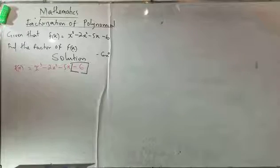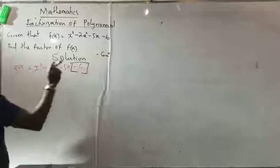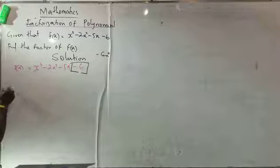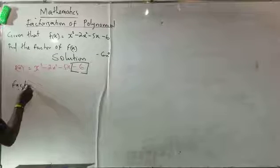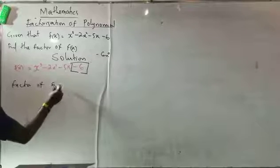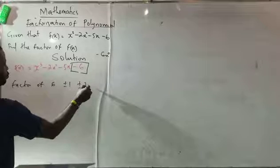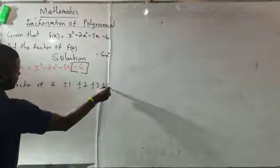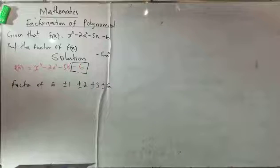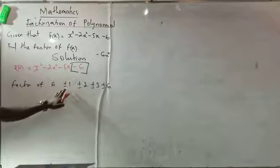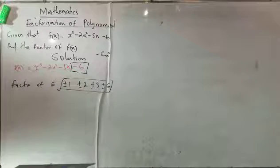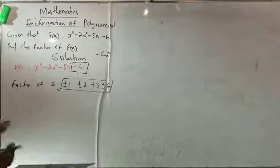I will look for this number. The factors of this number—what are the factors of this number? Factors of 6 will be plus or minus 1, plus or minus 2, plus or minus 3, plus or minus 6 himself. The root of this equation is embedded here.